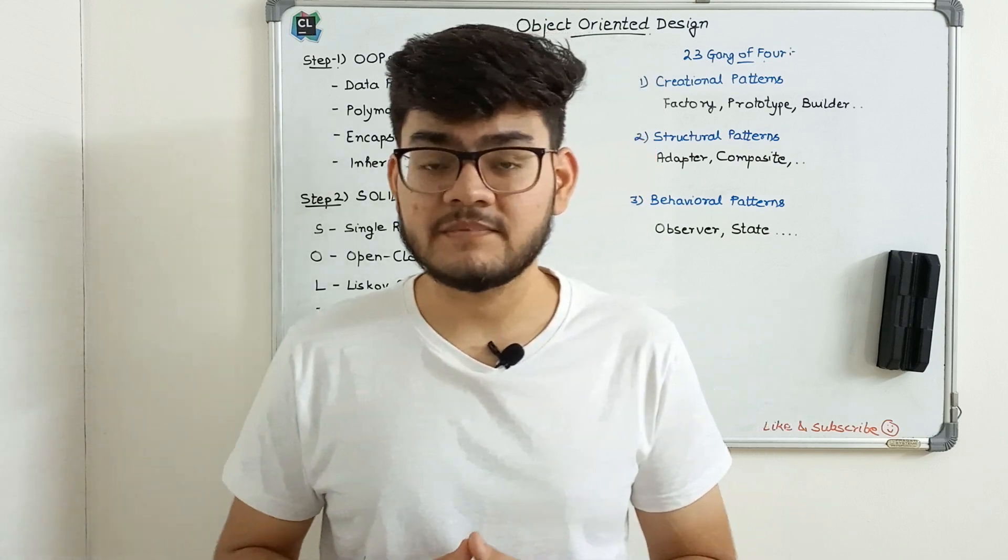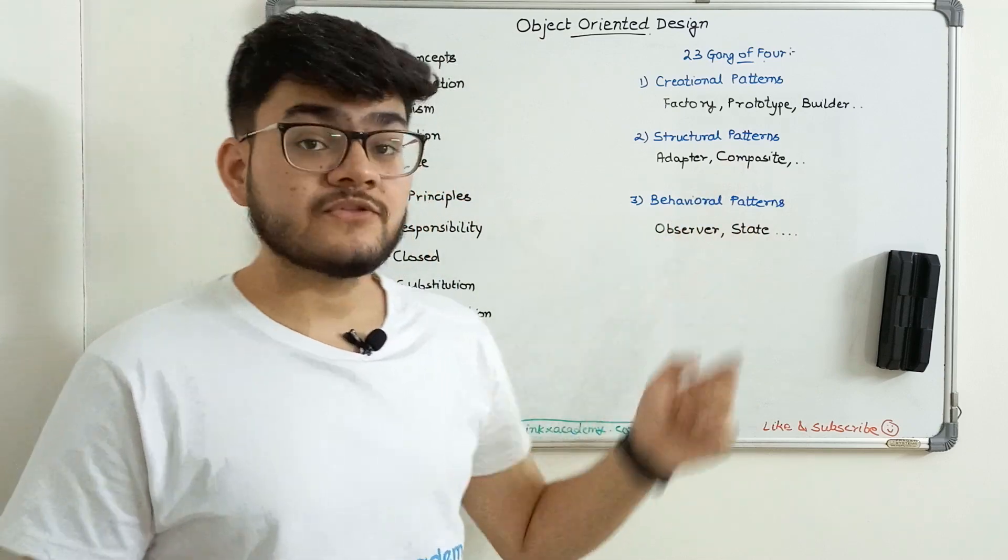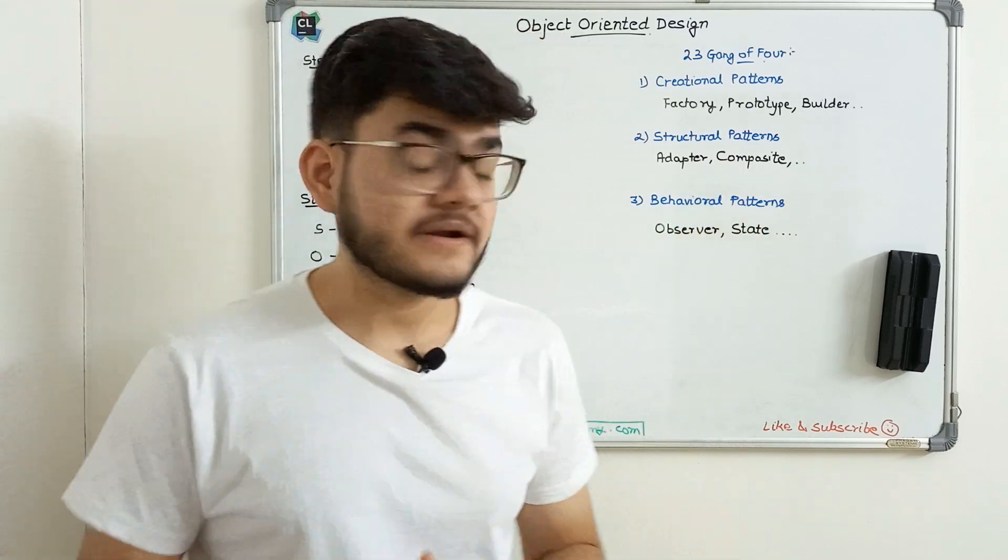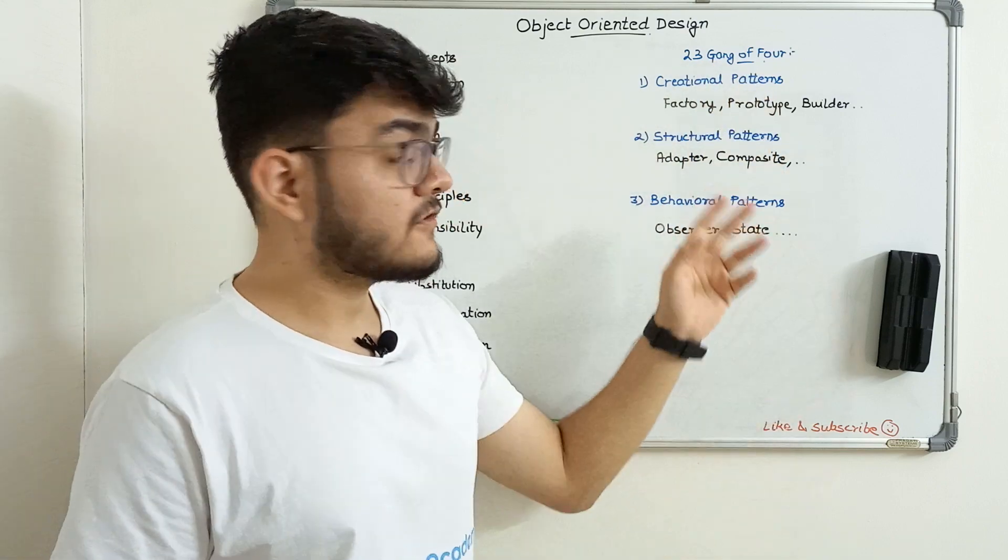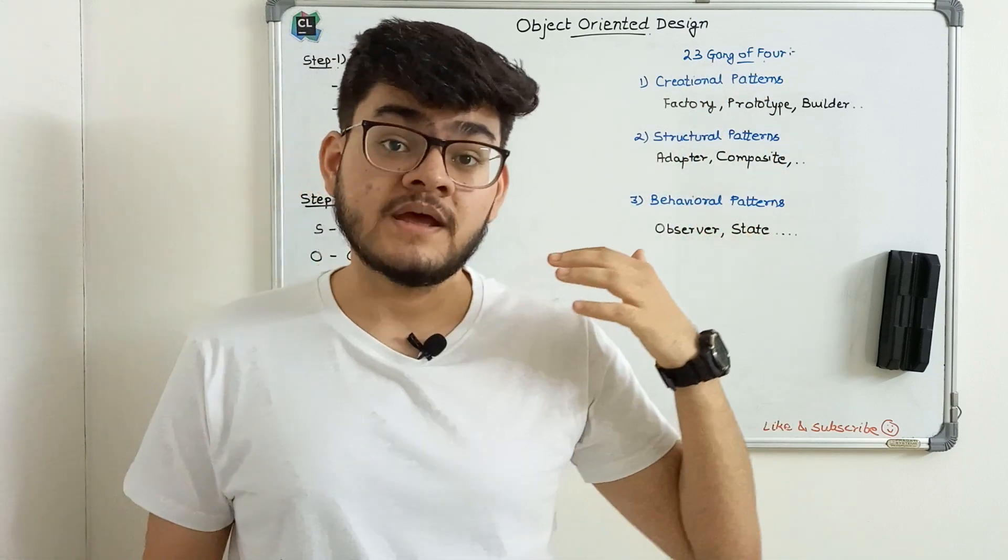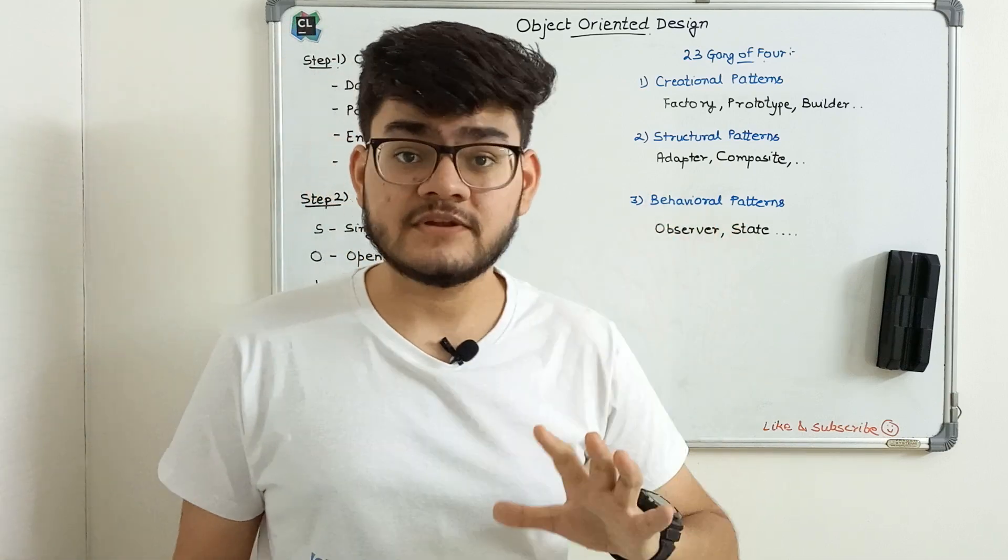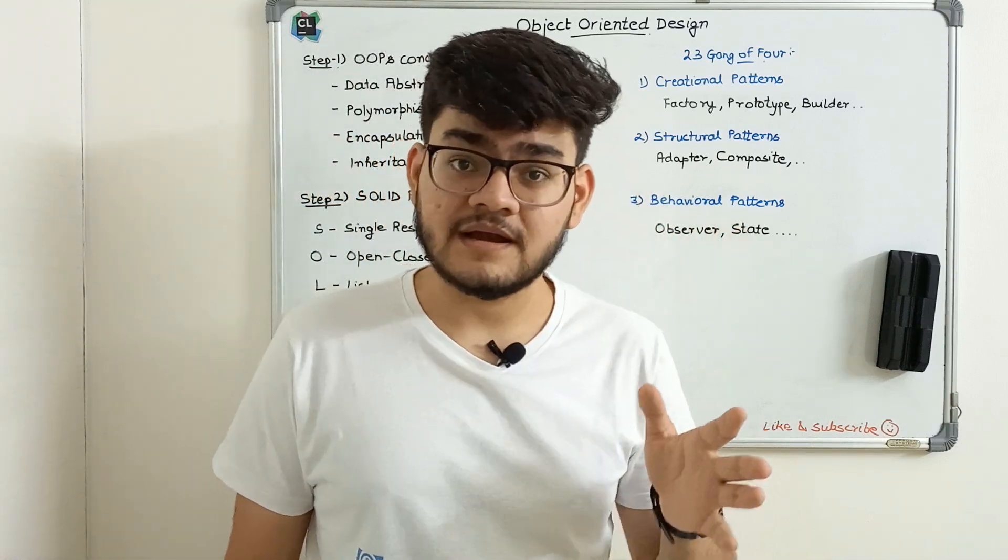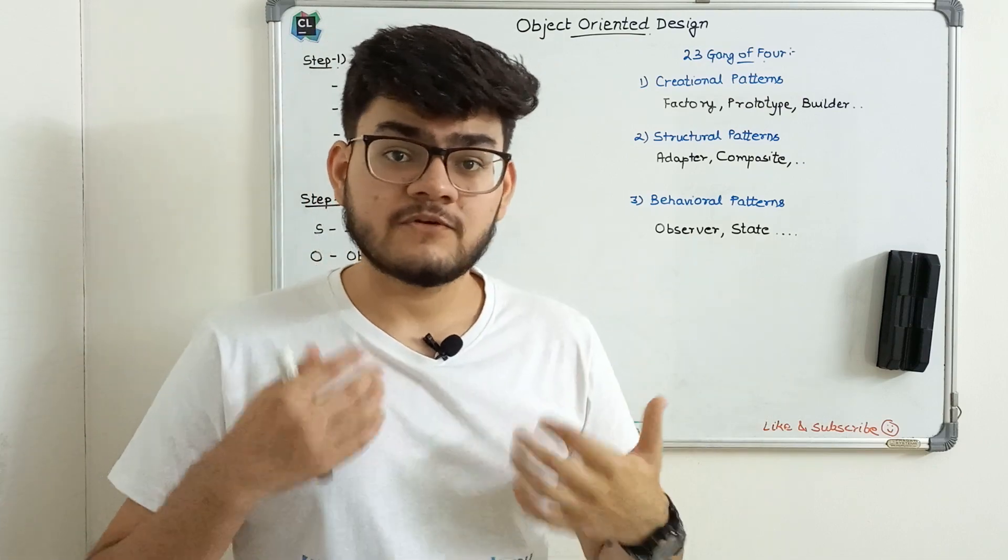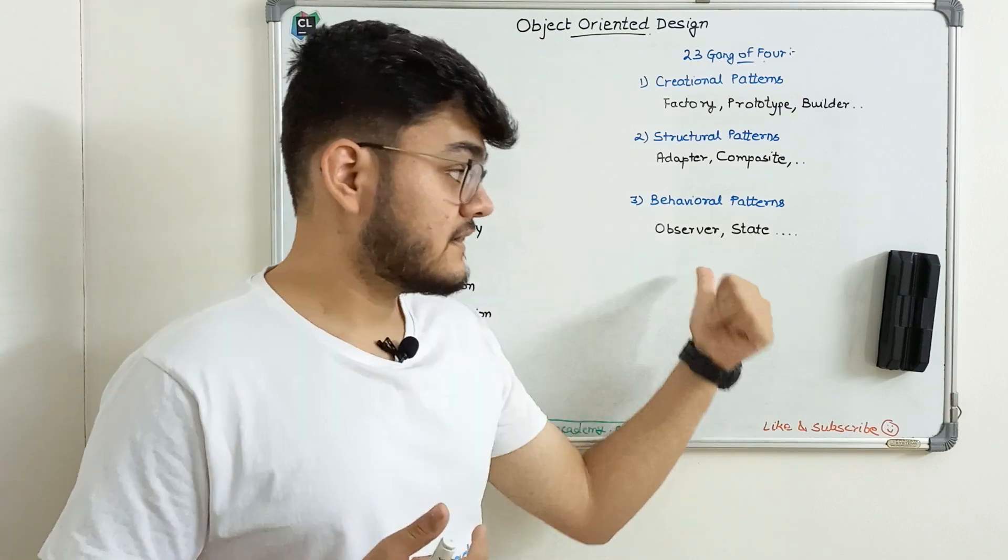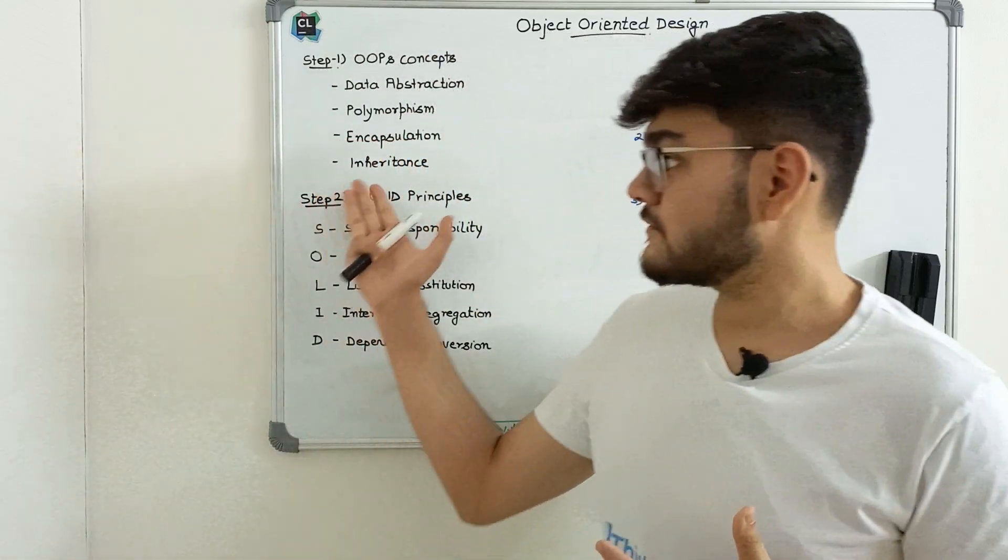There are four developers who created 23 design patterns in object-oriented programming, known as the Gang of Four. They were from big tech companies like IBM and worked on big projects. They generalized problems they faced into patterns that make use of OOPs concepts.